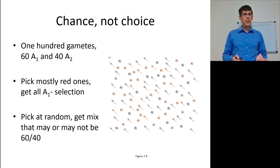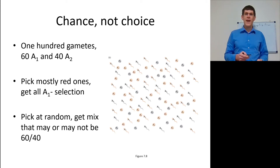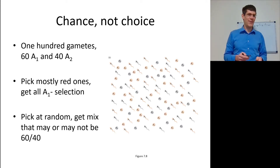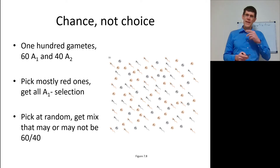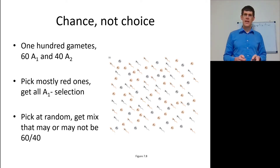Was it significantly different? At random, one of those might have been not 60-40, and that was a sampling error — something that could lead to genetic drift.